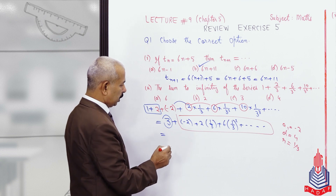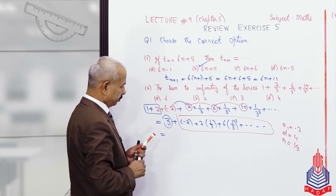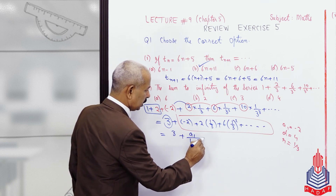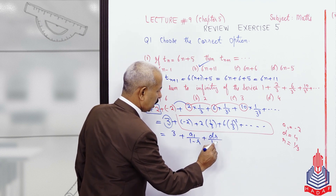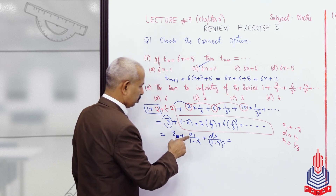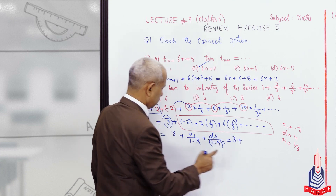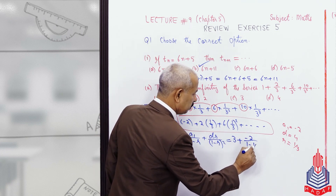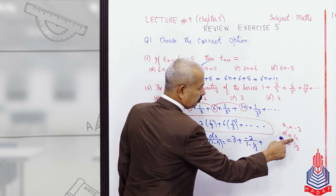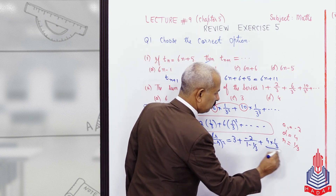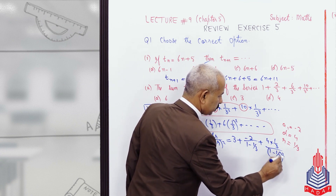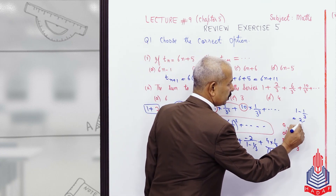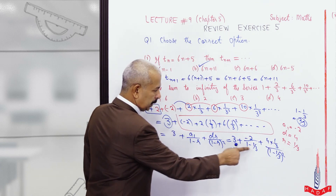Apply the infinite arithmetico-geometric series formula. The 3 stays in place. The formula is: a1/(1 minus r) plus dr/(1 minus r)². Substituting: 3 plus (minus 2)/(1 minus 1/3) plus (4 into 1/3) divided by (1 minus 1/3)². Note that 1 minus 1/3 equals 2/3, so we substitute 2/3 accordingly.